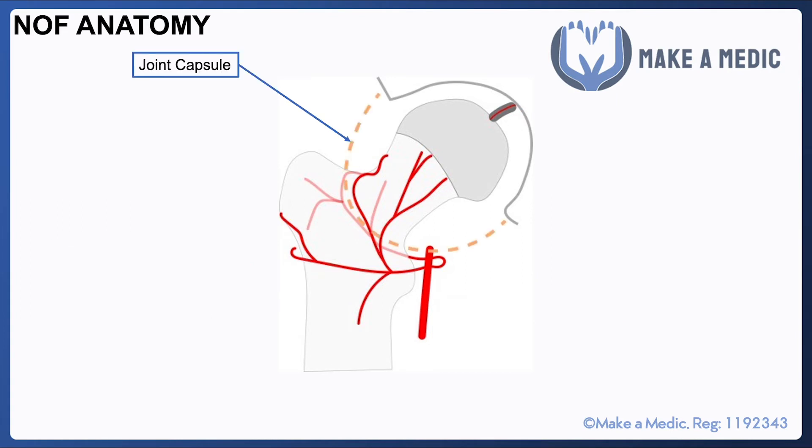The other anatomical structure that's important to bear in mind when it comes to neck of femur fractures is the joint capsule — the ligaments that surround the head of the femur and the acetabulum. The joint capsule acts as a landmark which helps determine whether the blood supply to a certain fracture is likely to be compromised or not.